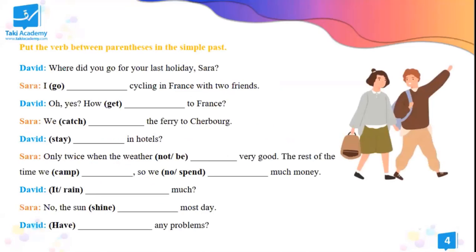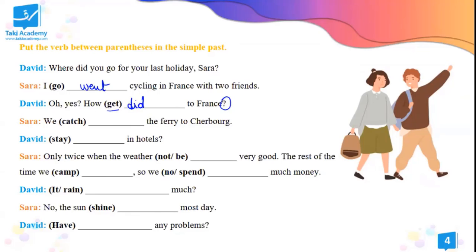Now we have a conversation between David and Sarah, and we'll keep practicing putting the verbs in the simple past. Let's have a boy and a girl. Nihed, let's have you for David and Sarah. You are Sarah. Where did you go for your last holiday, Sarah? I went cycling in France with two friends. There is a question — 'did'. So: how did you go?